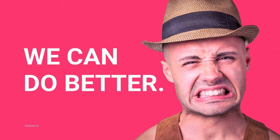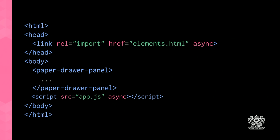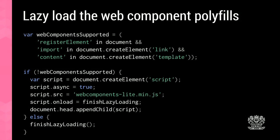We can do even better. That polyfill script tag is loaded unconditionally, even in Chrome where the native APIs are available. Instead, as good web developers, we should feature-detect and load conditionally. Inside a new app.js file, you check for custom elements, imports, and the template tag — three feature checks. If the Web Components native APIs aren't supported, dynamically load the polyfill script. This provides the resource only to browsers that need it.